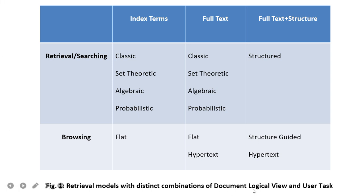A retrieval model combines a distinct document logical view with the user task of retrieval, searching, and browsing. The document logical view can be in index terms, full text, or full text plus structure. For retrieval and searching, index terms and full text use classic, set theoretic, algebraic, and probabilistic models. For full text plus structure, the structured model is used. For browsing with index terms, flat documents are used; with full text, flat and hypertext; and with full text plus structure, structure guided and hypertext come into the picture.